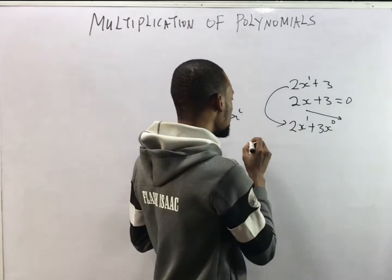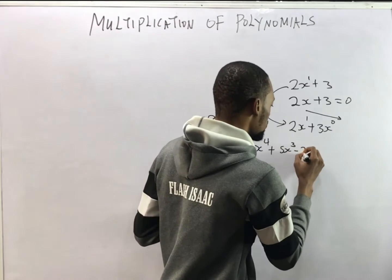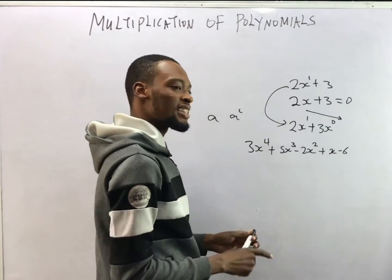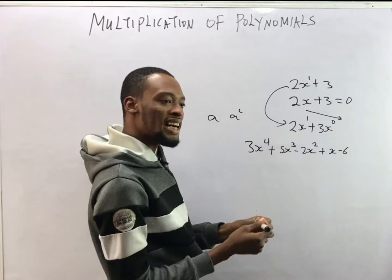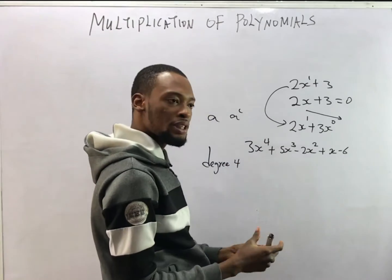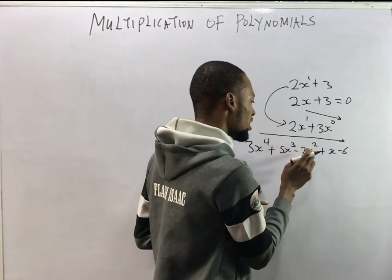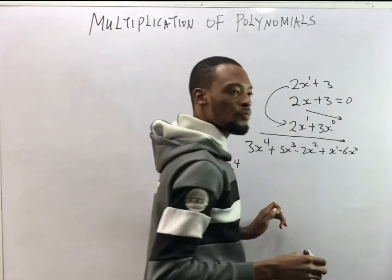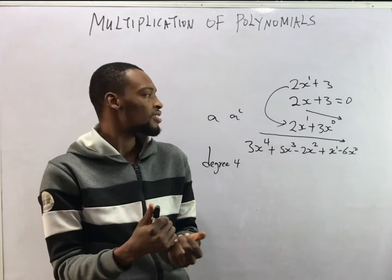These are not the only polynomials — we have polynomials of higher degrees. You can have something like 3s raised to the power of 4, plus 5s raised to the power of 3, minus 2s raised to the power of 2, plus s, minus 6. The highest power here is 4, so this polynomial is of degree 4. The powers of the variable are descending: s⁴, s³, s², s¹, s⁰.